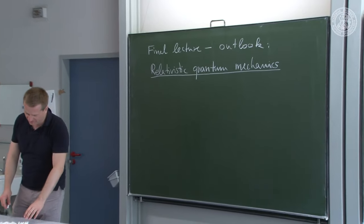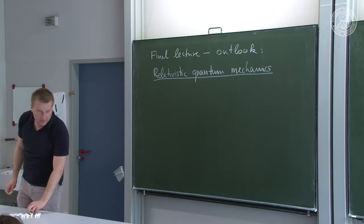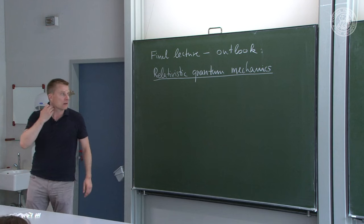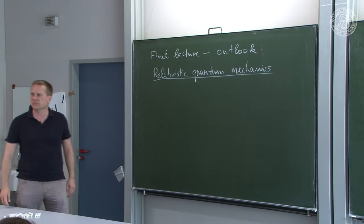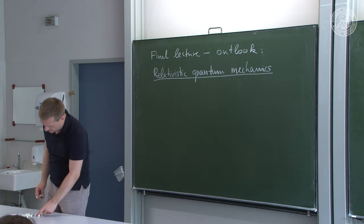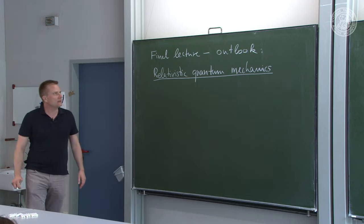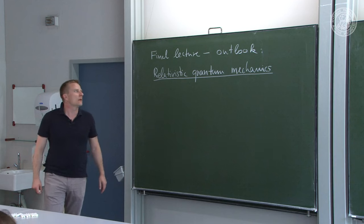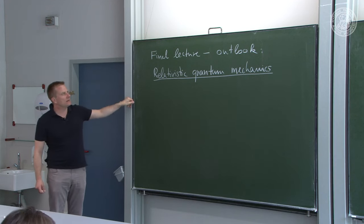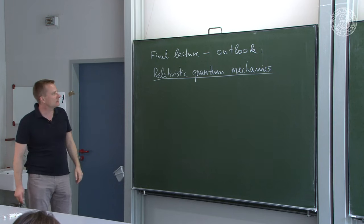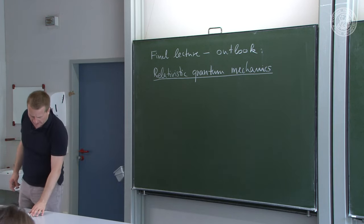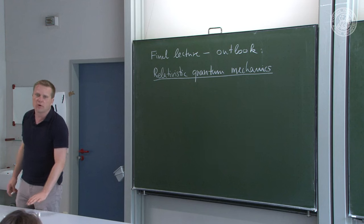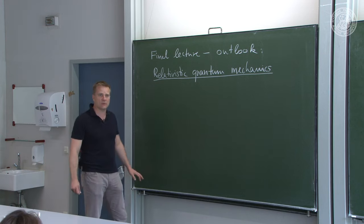Welcome to the final lecture of this series. Today I would like to point out where the subject was taken a hundred years ago, because when quantum mechanics proper was born by Schrödinger, Dirac, Heisenberg and so on, the first revolution in physics of that century had already taken place — namely relativity. So what we will do today is look at quantum mechanics in a relativistic context. That is a huge subject, but it could be that only small modifications to the existing formalism and equations would be necessary.